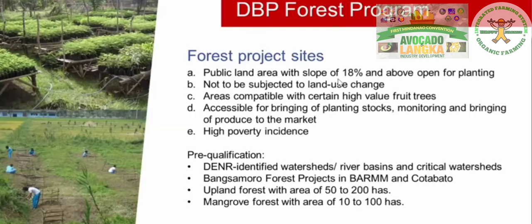In selecting the site for a forest project, DBP considers the following: first, public land areas for upland forest — areas with a slope of 18 degrees and above that are open for planting; second, it should not be subjected to land use change; and third, areas proven to be compatible with certain high-value fruit trees.